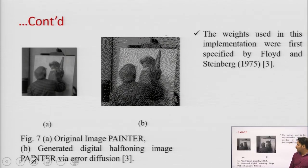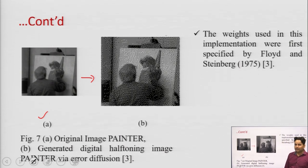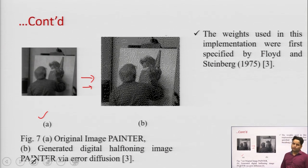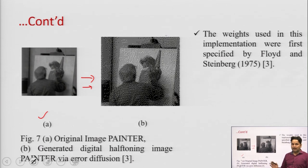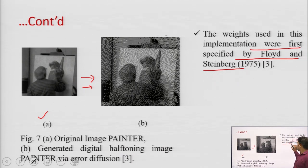Looking at the output of error diffusion digital halftoning: if we have the original printer image, after using error diffusion digital halftoning the image looks more advanced and clearer compared to the previous two methods — patterning and dithering. Error diffusion is the most advanced version of digital halftoning, and it was specified by Floyd and Steinberg, who proposed this method in 1975.